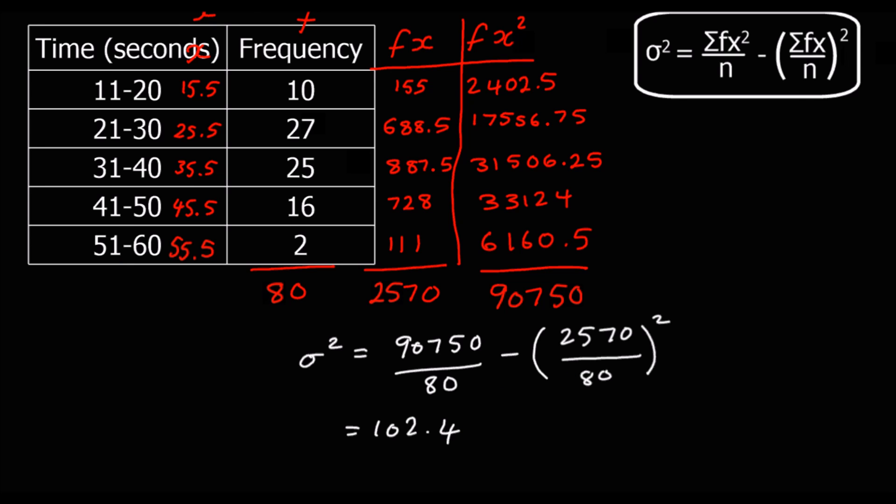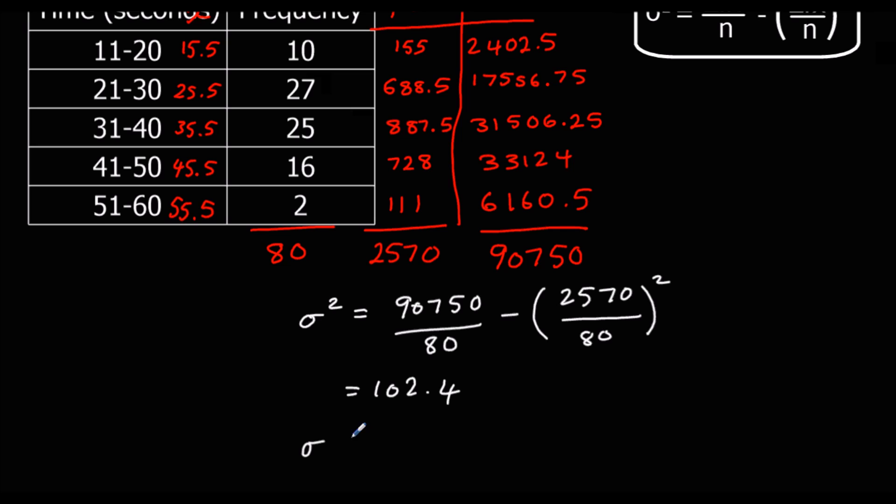And then if we want the standard deviation, we're just going to square root the variance. So square root answer, and that will be 10.1 to one decimal place.